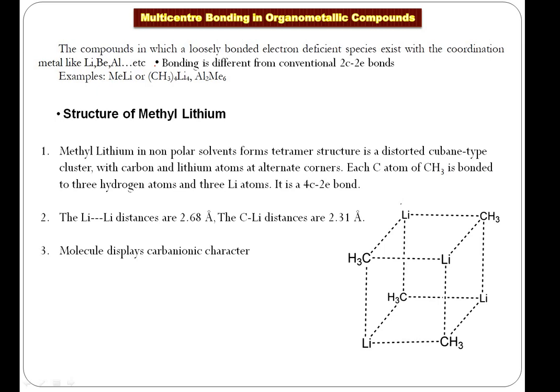In multi-center bonding there are two types — two classes of compounds where multi-center bonding exists. One class I have already discussed in the previous lecture on classification of organometallic compounds — for example, ferrocene and Zeiss salt. That portion I will not be re-discussing here. I will be discussing the second part, which is most important.